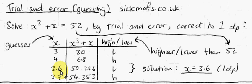So 3.6, I happen to know, is pretty close. So 3.6 cubed plus 3.6 equals 50.256. And 3.7, if I stick it in for x, I get 3.7 cubed plus 3.7 is 54.353.